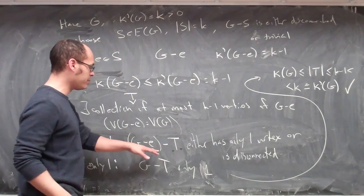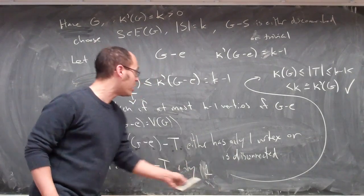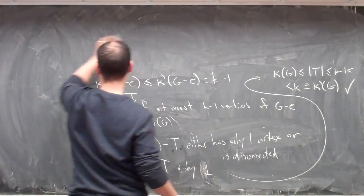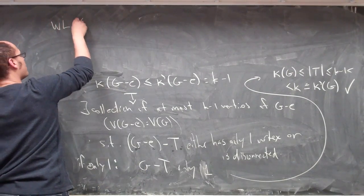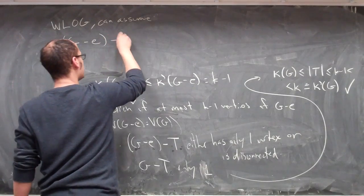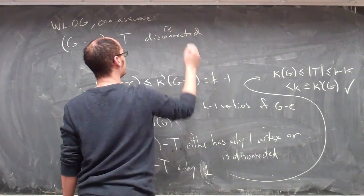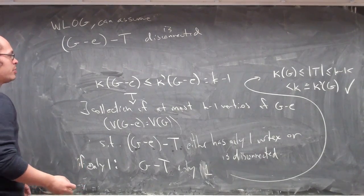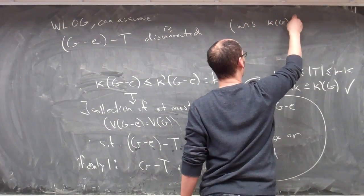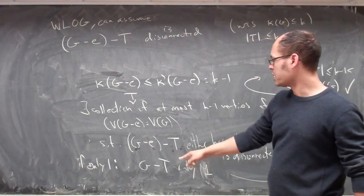So without loss of generality, what we can assume is that if I look at G minus e minus t, this is a non-trivially disconnected graph. We want to show that the vertex connectivity of the graph is less than or equal to k, and we know the size of t is less than or equal to k minus one.